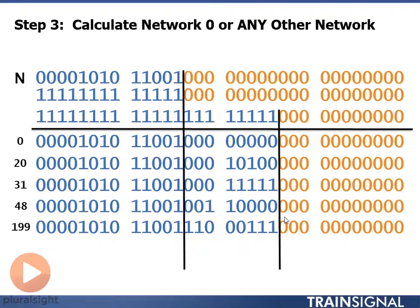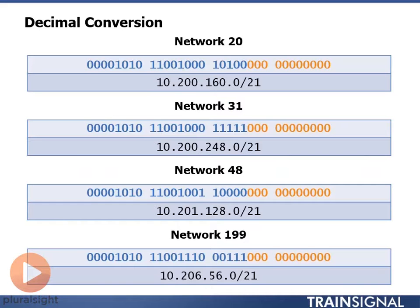Alright, let's move on to converting this from binary to decimal. And take a look at what we got. I'm skipping network 0 because network 0 is the same as the given network with our calculated mask. So network 0 in this case is 10.200.0.0 slash 21. Network number 20: 10.200.160.0 slash 21. Network 31 is 10.200.248.0 slash 21. 48 is 10.201.128.0 slash 21. And 199 is 10.206.56.0 slash 21.